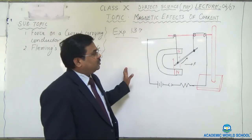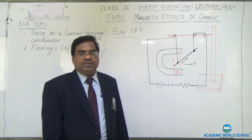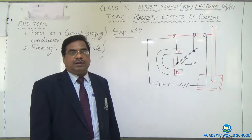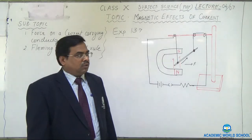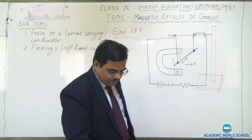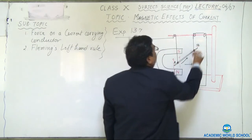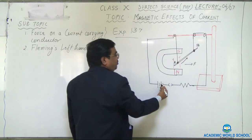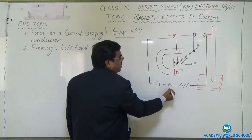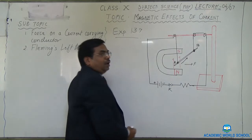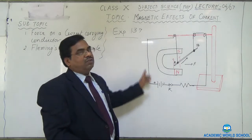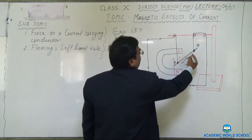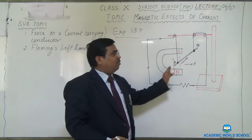As you can see on the board, I have already drawn the circuit diagram of the setup of experiment number 13.7. This experiment is for force on the current carrying conductor. Here, rod AB is the conductor. I have connected two wires on the ends A and B, and they are connected with a cell. When I switch on the key, the battery will apply the potential, and current will flow in the wire. Inside conductor AB, the current will flow from A to B.